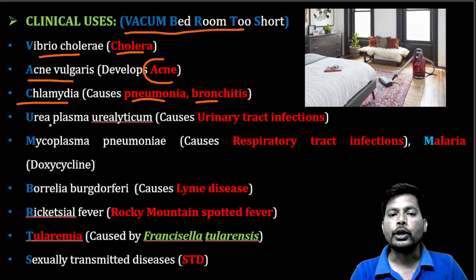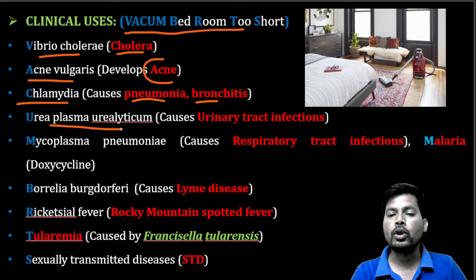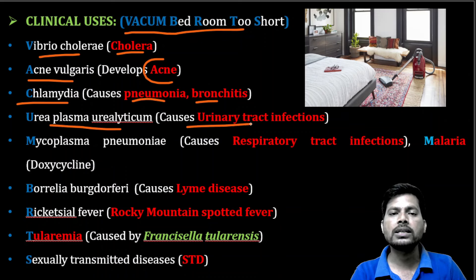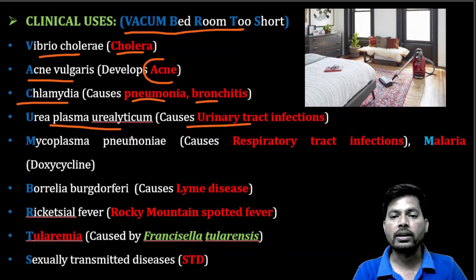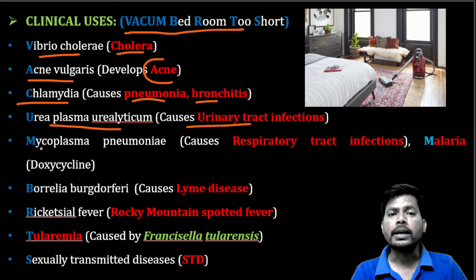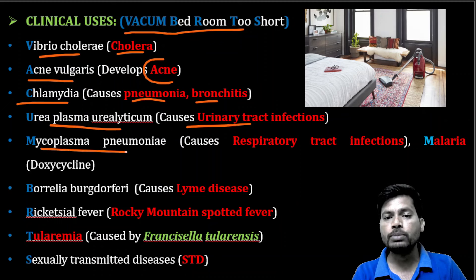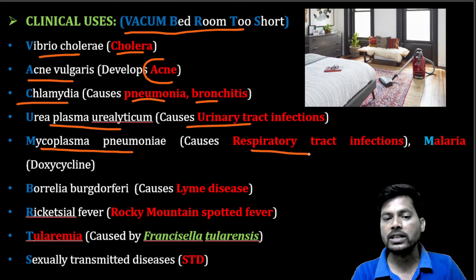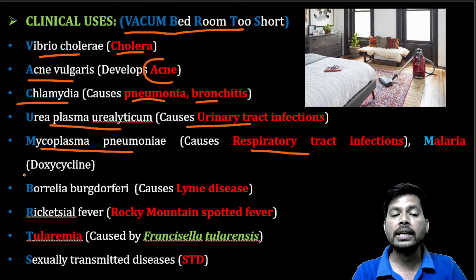Ureaplasma urealyticum causes urinary tract infections, and tetracyclines can help in the treatment of UTIs. Tetracycline also inhibits Mycoplasma pneumoniae and decreases respiratory tract infections caused by Mycoplasma pneumoniae.